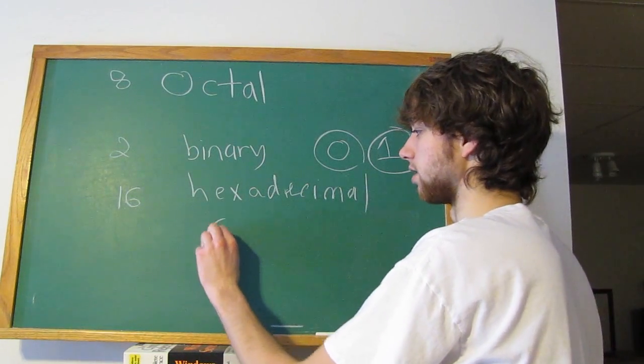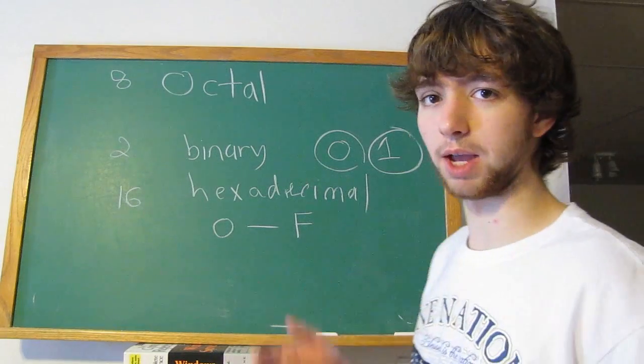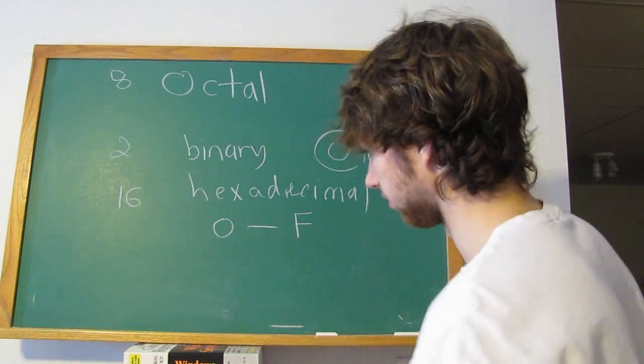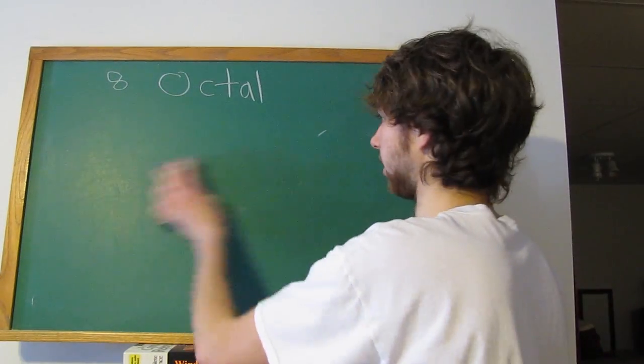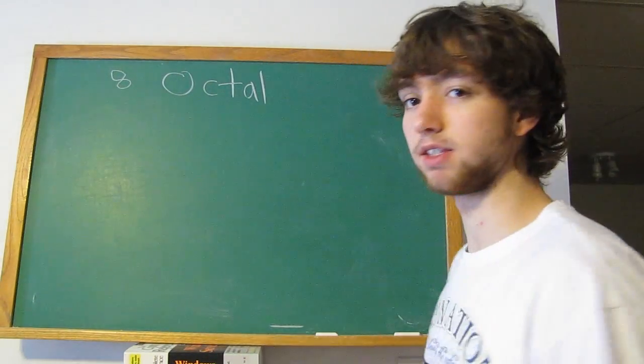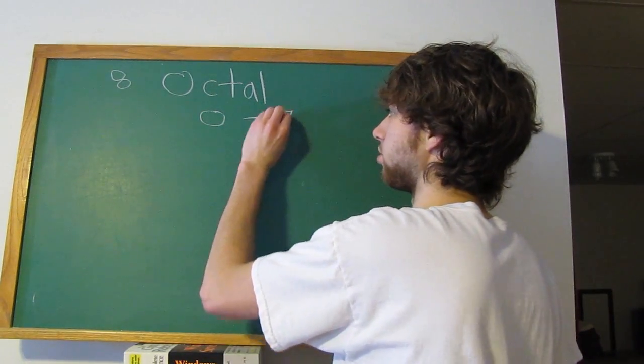Hexadecimal is 0 through F, which if you don't really know what that means, go check out my hexadecimal video. Octal, on the other hand, is a system with a base 8. That means we get the range 0 to 7.